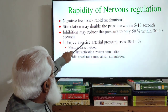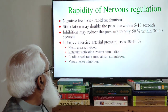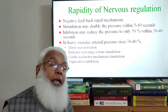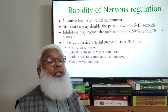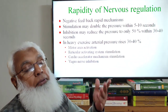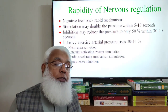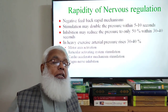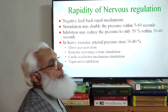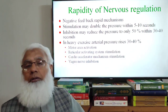In heavy exercise, blood pressure has to increase. Whenever sympathetic stimulation is present and enhanced to increase blood pressure, the opposite system — the vagus nerve — is inhibited. So sympathetic stimulation and vagal inhibition occur together when blood pressure must be increased.